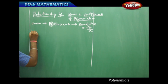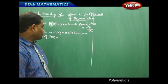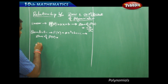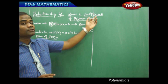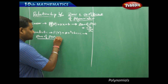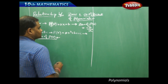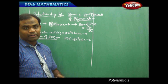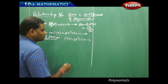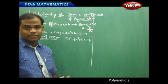Now let's try for the quadratic polynomial, the next polynomial of degree 2. In the case of the quadratic polynomial, let's see the relation between the zeros and the coefficients. Let me take an example: 3x squared plus 5x minus 2, where the coefficient of x squared is 3, the coefficient of x is 5, and the constant is negative 2.